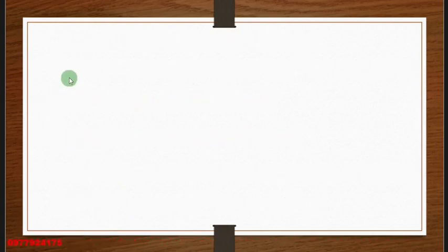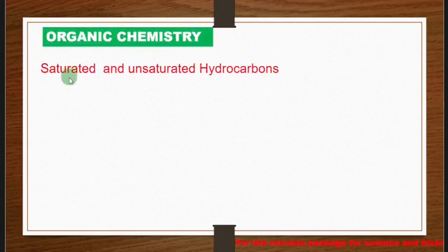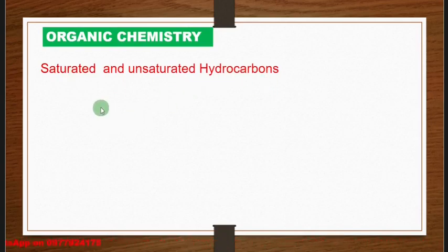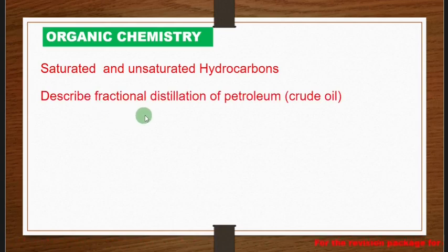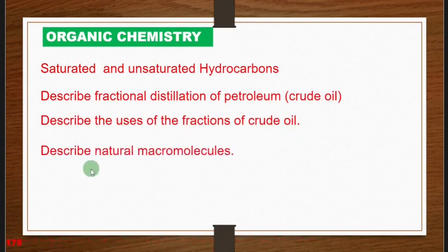Finally, under organic chemistry, you need to look at saturated and unsaturated hydrocarbons — alkanes and alkenes — describe the fractional distillation of petroleum crude oil, describe the uses of the fractions of crude oil, and describe natural macromolecules.